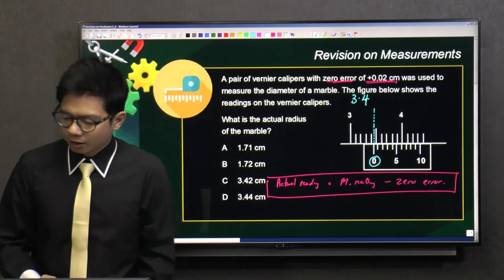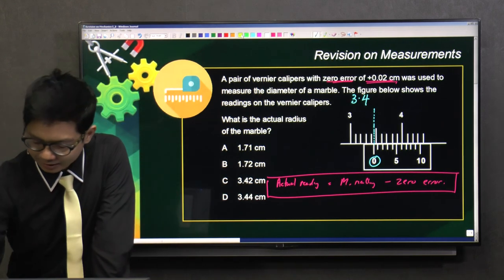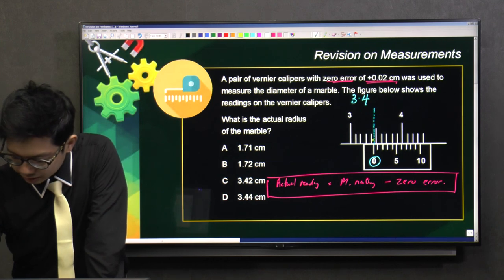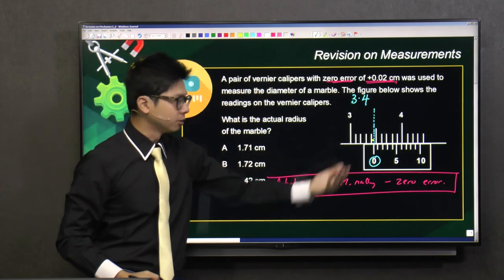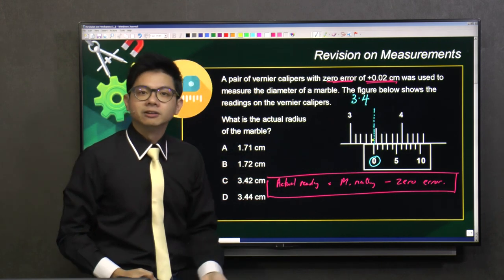And of course, there is this extra portion. You can see this yellow portion down here. So we have to add in this part. How do we add? We have to look at the vernier scale.